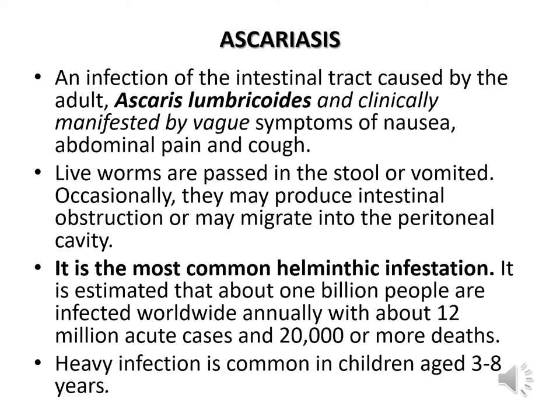Now we will discuss each of the soil-transmitted helminthiasis infections in detail. First, we will discuss roundworm infection, i.e., Ascariasis. It is basically an infection of the intestinal tract caused by adult Ascaris lumbricoides, and it is clinically manifested by symptoms of nausea, abdominal pain, and cough. Live worms are passed in the stool or vomited. Occasionally they may produce intestinal obstruction or migrate into the peritoneal cavity. Ascariasis is the most common helminthic infestation, estimated to affect about 1 billion people worldwide annually, with about 12 million acute cases and 20,000 or more deaths.